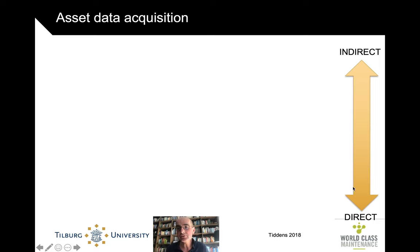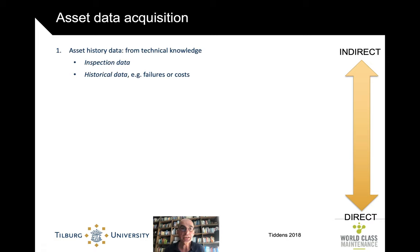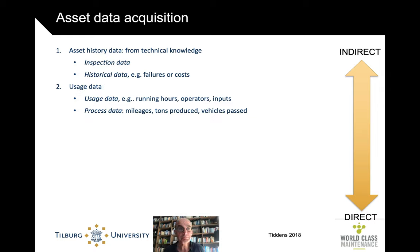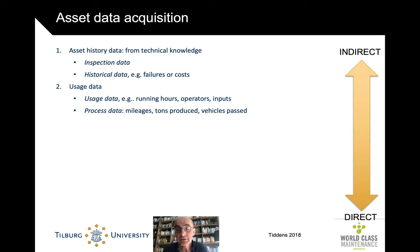Data acquisition can be more direct or indirect. Very indirect is taking historical data — inspection records of what has happened to this asset in the past. More direct is using the user's data: running hours, operators, input, but also things like mileage, tonnes produced, how many vehicles passed a road, or how far an aircraft or car drove. These are all indicators you can use for condition-based maintenance.